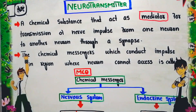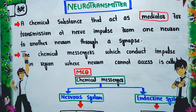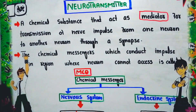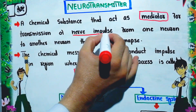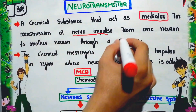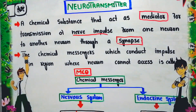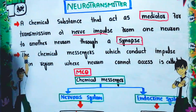The mediator is a molecule responsible for the transmission of signaling. The neurotransmitter is responsible for the transmission of the signal in the form of a nerve impulse from one neuron to another neuron, and this transmission occurs right at the place of the synapse.